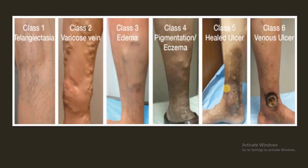These are the classes or sequelae of varicosity of the lower limb. Class 1 is telangiectasia or reticular veins. Class 2 is varicose veins. Class 3 is edema. Class 4 is pigmentation or eczema. Class 5 is healed ulcer. Class 6 is venous ulcer. These classes represent the complications and progression of varicose veins.